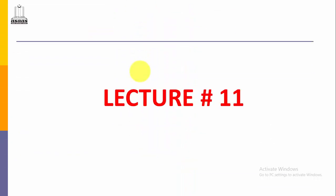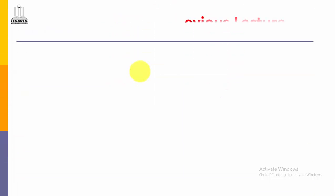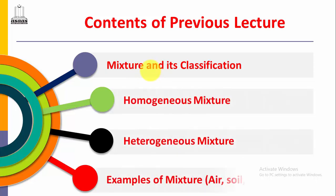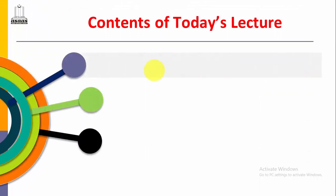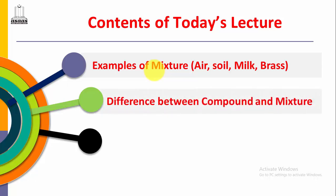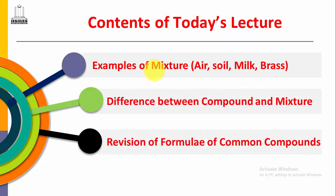In the previous lecture we studied about mixture, its classification, homogeneous and heterogeneous mixture, and some examples of mixture: air, soil, milk and brass. So in today's lecture we continue from the previous lecture, covering examples of mixture — air, soil, milk and brass — difference between compound and mixture, and revision of the formula of common compounds.